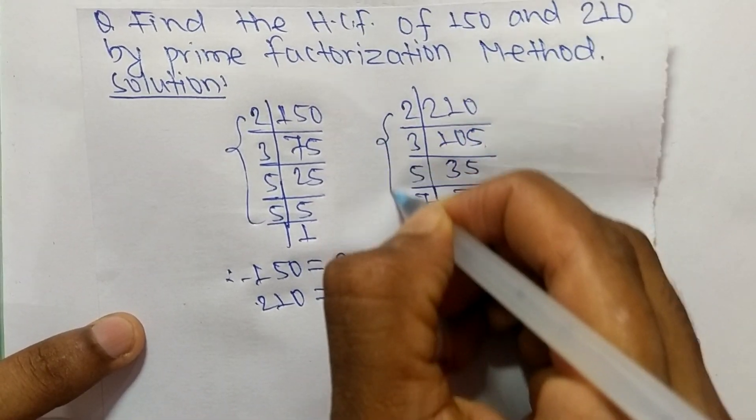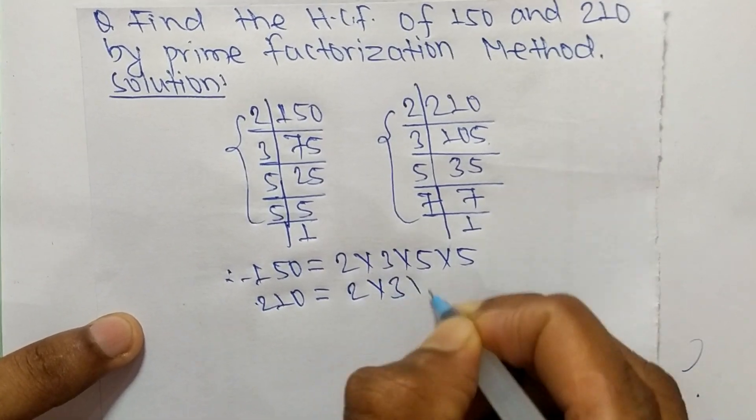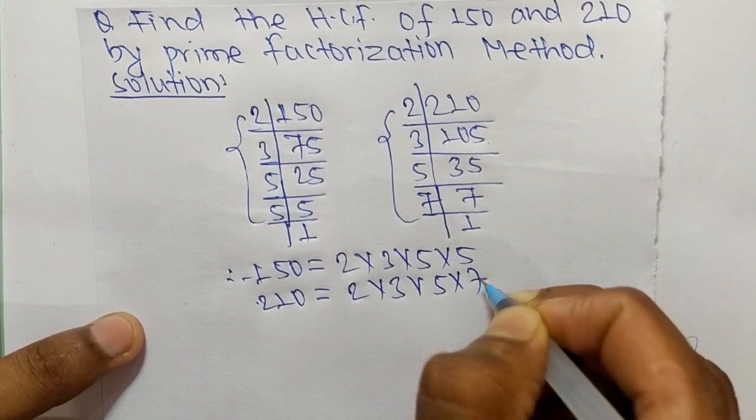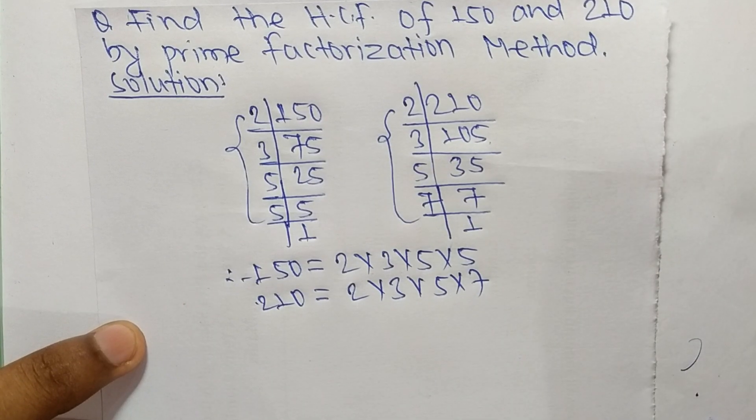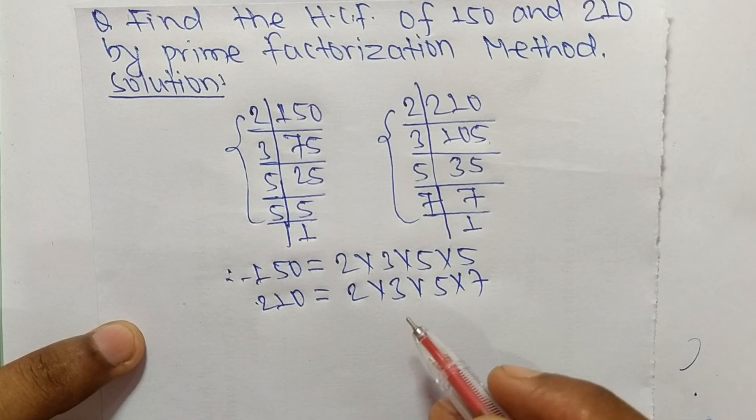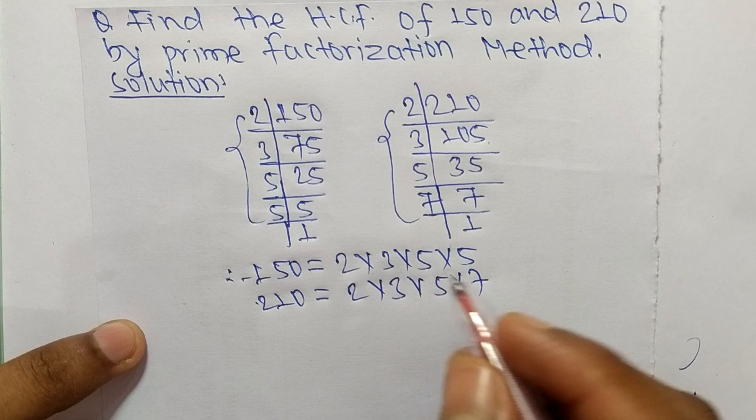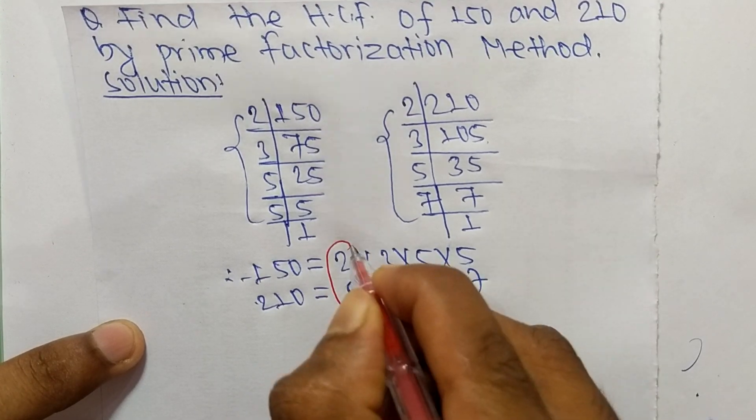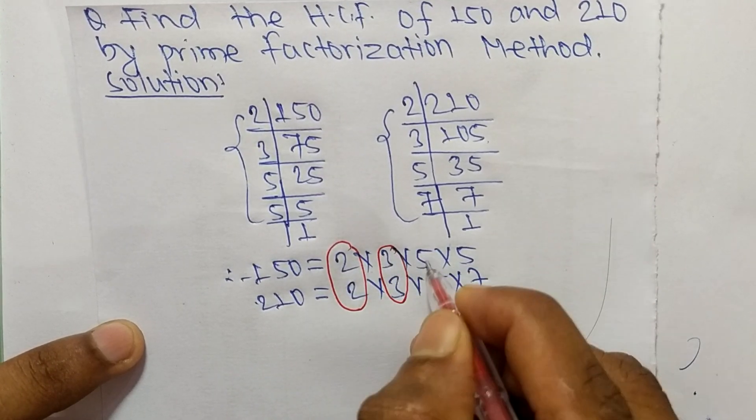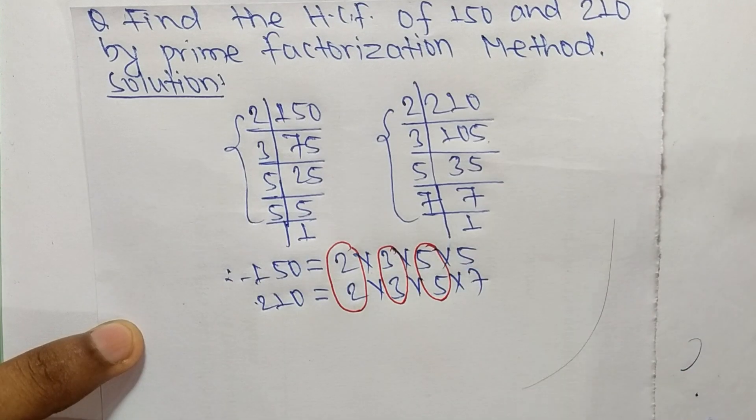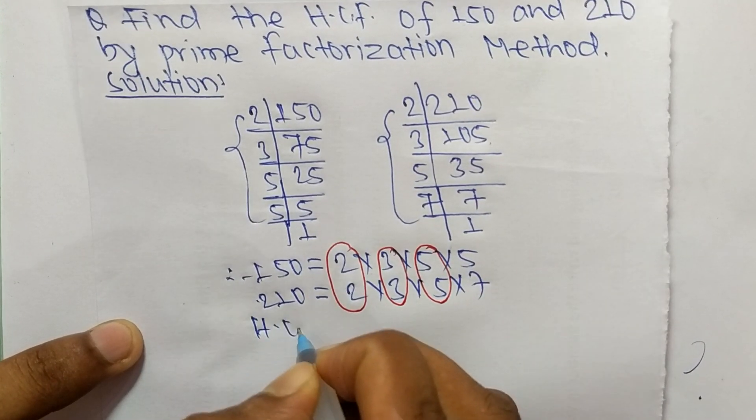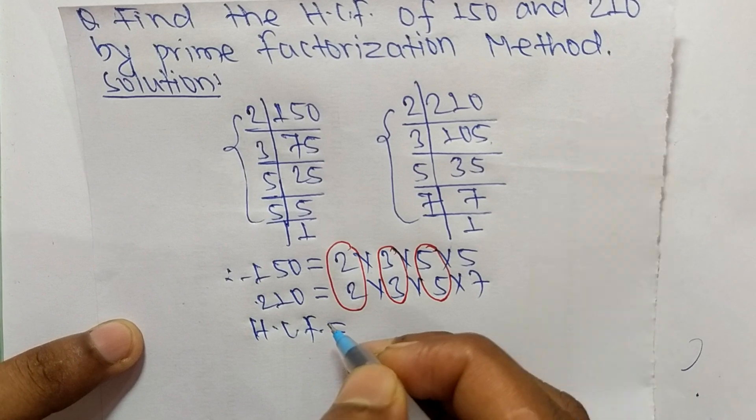From these prime factors, now we select the common factors. The common factors here are 2, 3, and 5. So the HCF is equal to the product of common factors.